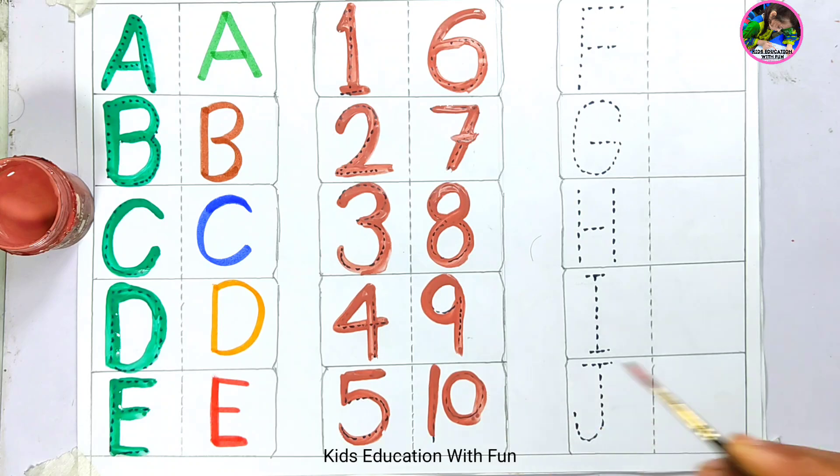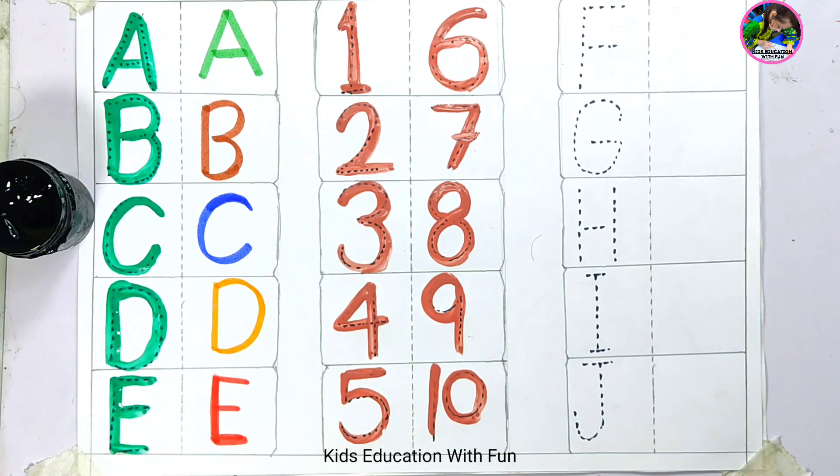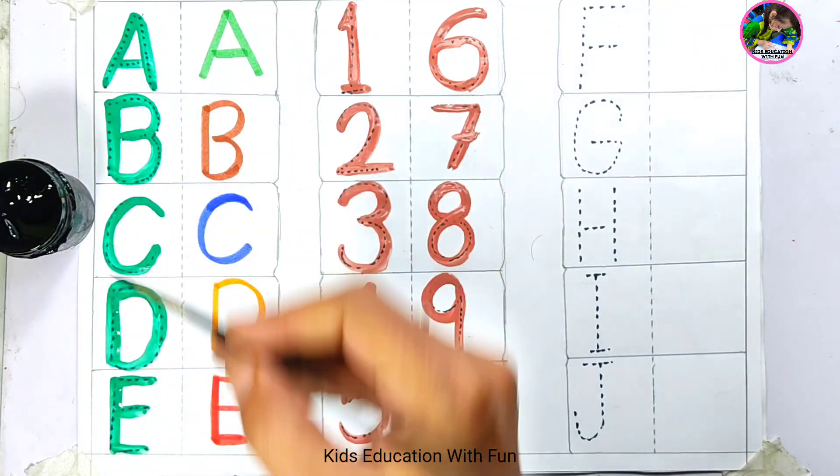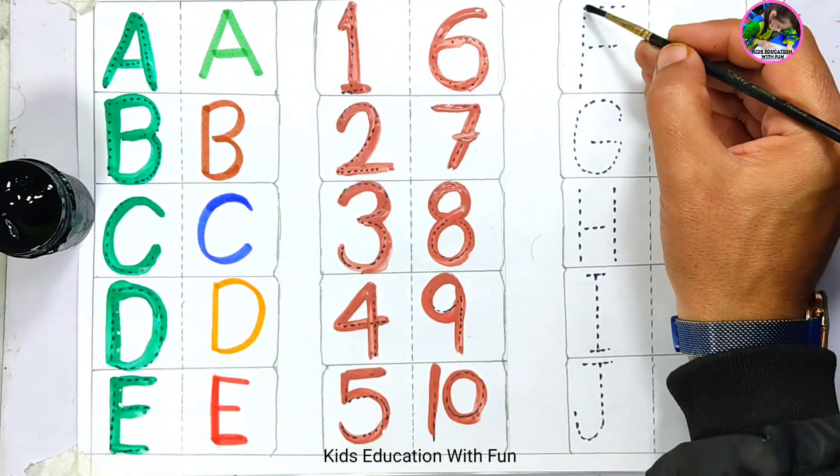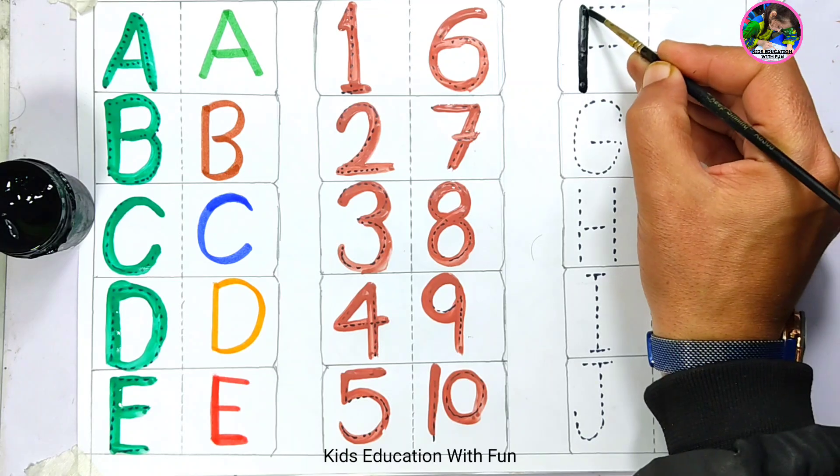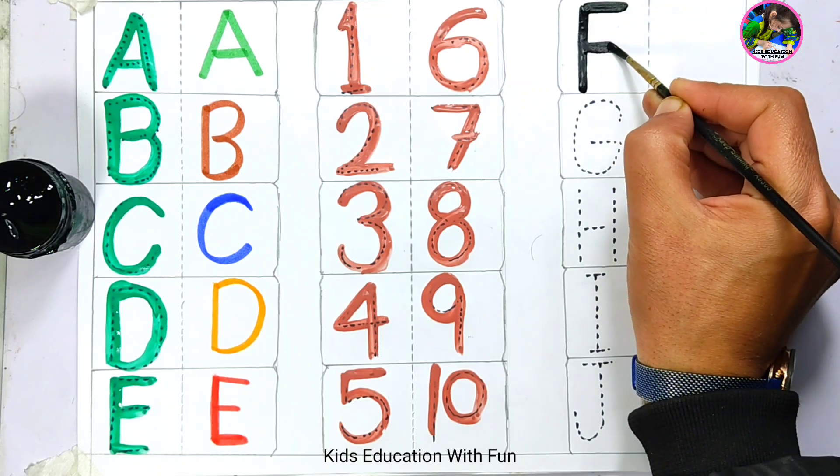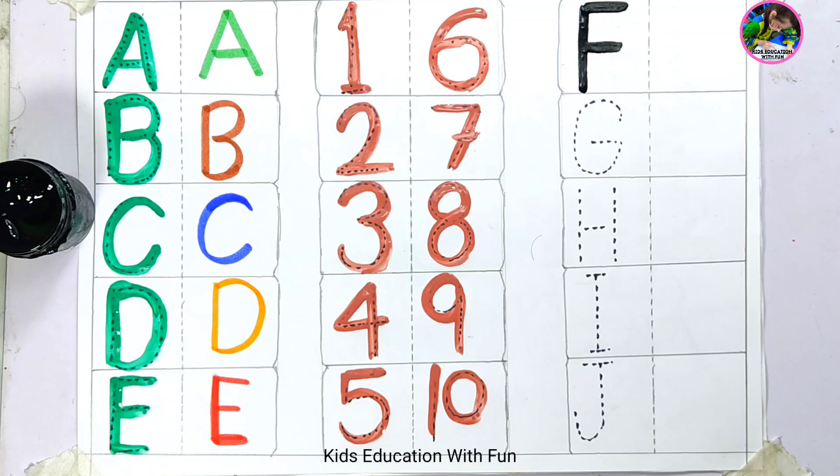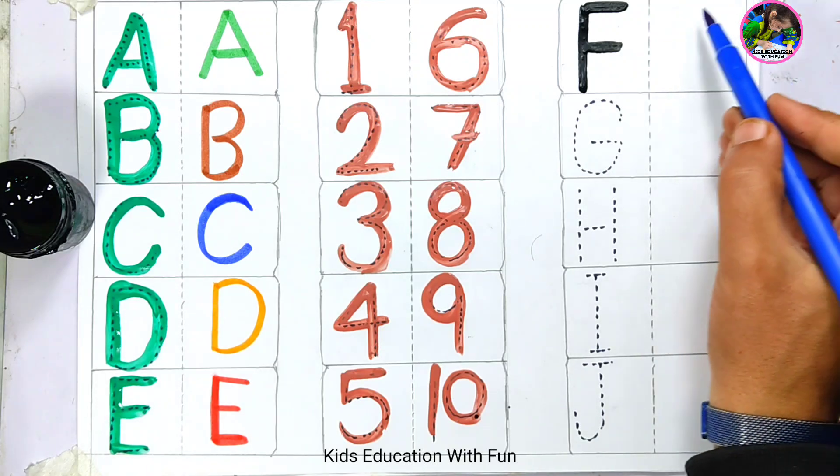Number 10. Black color. Now after letter E is letter F. This is letter F. F is for fish. Letter F, F is for fish.